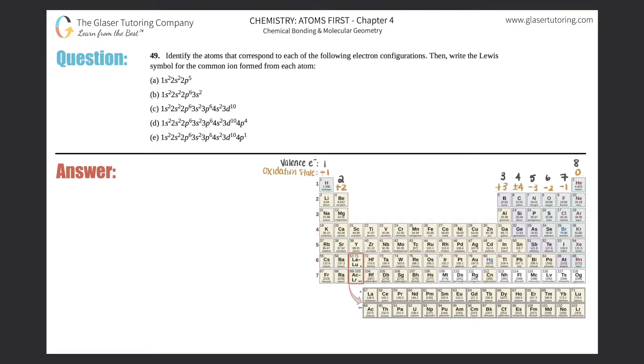Number 49: identify the atoms that correspond to each of the following electron configurations, then write the Lewis symbol for the common ion formed from each atom. Okay, so they gave us a through e.